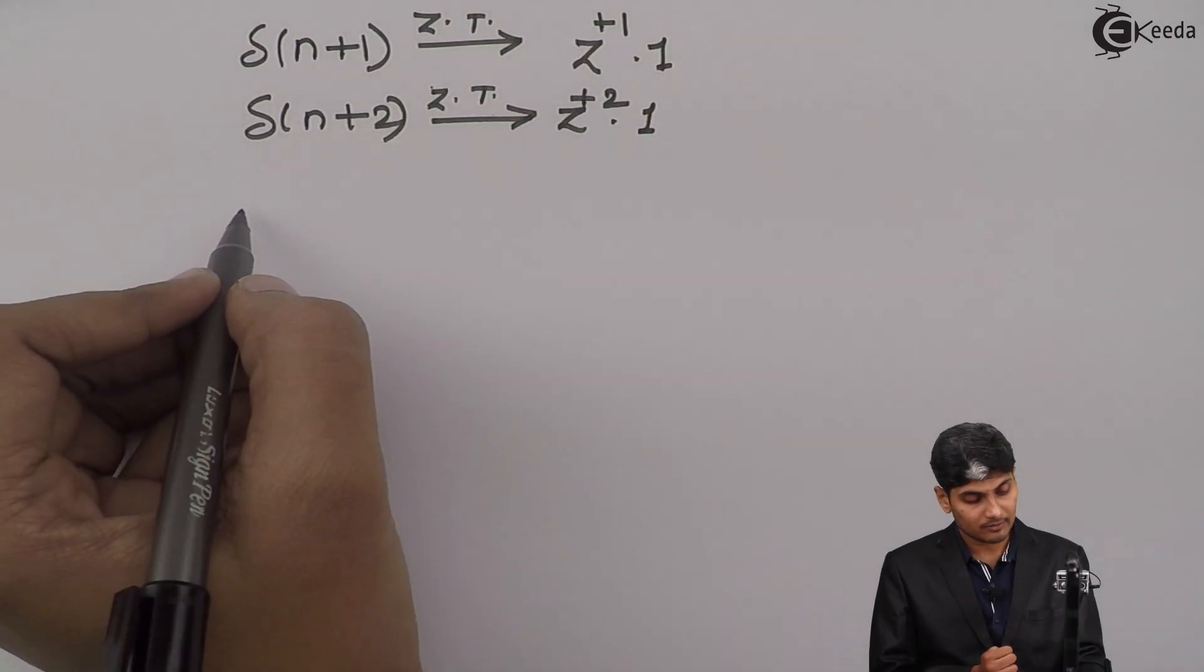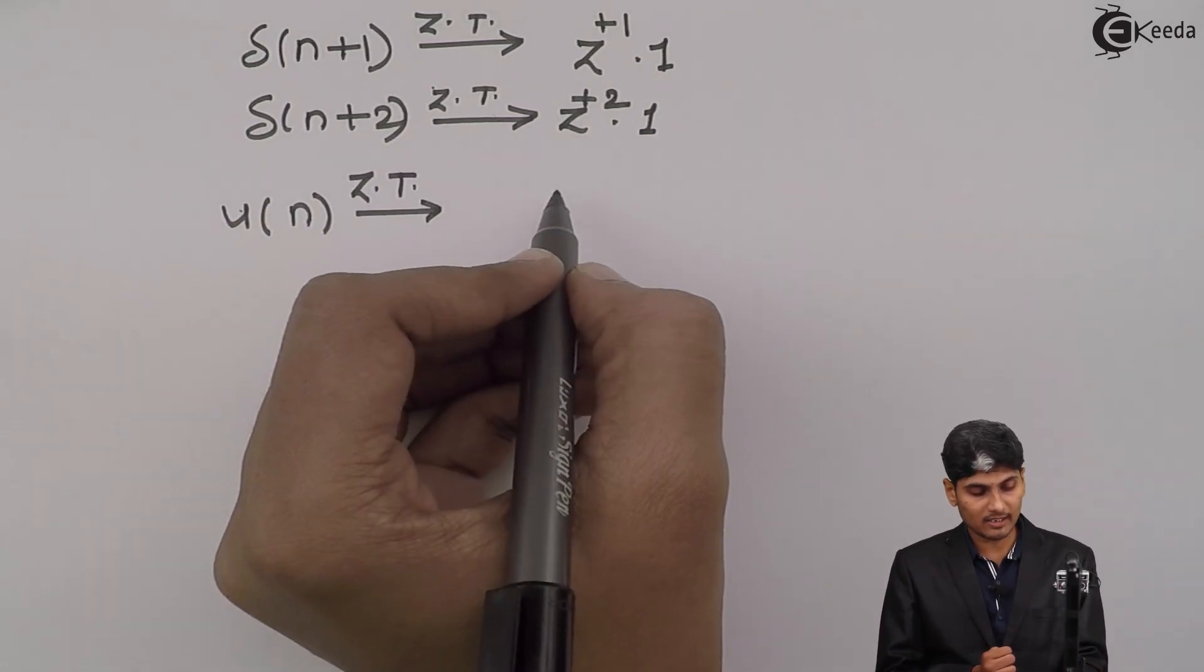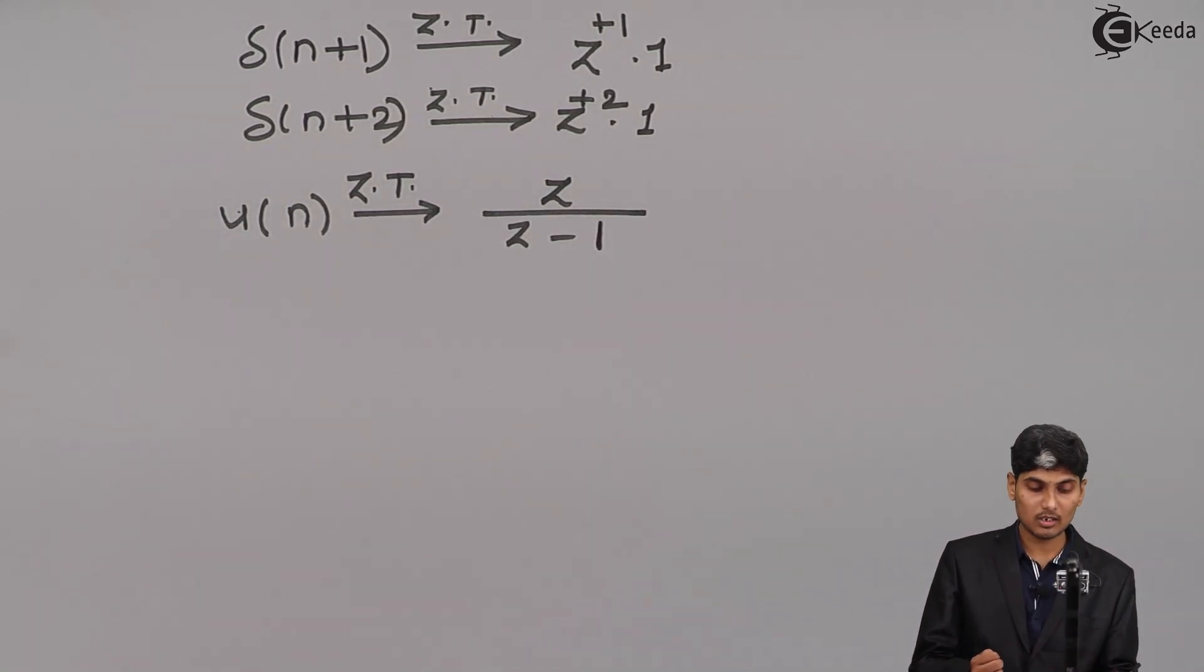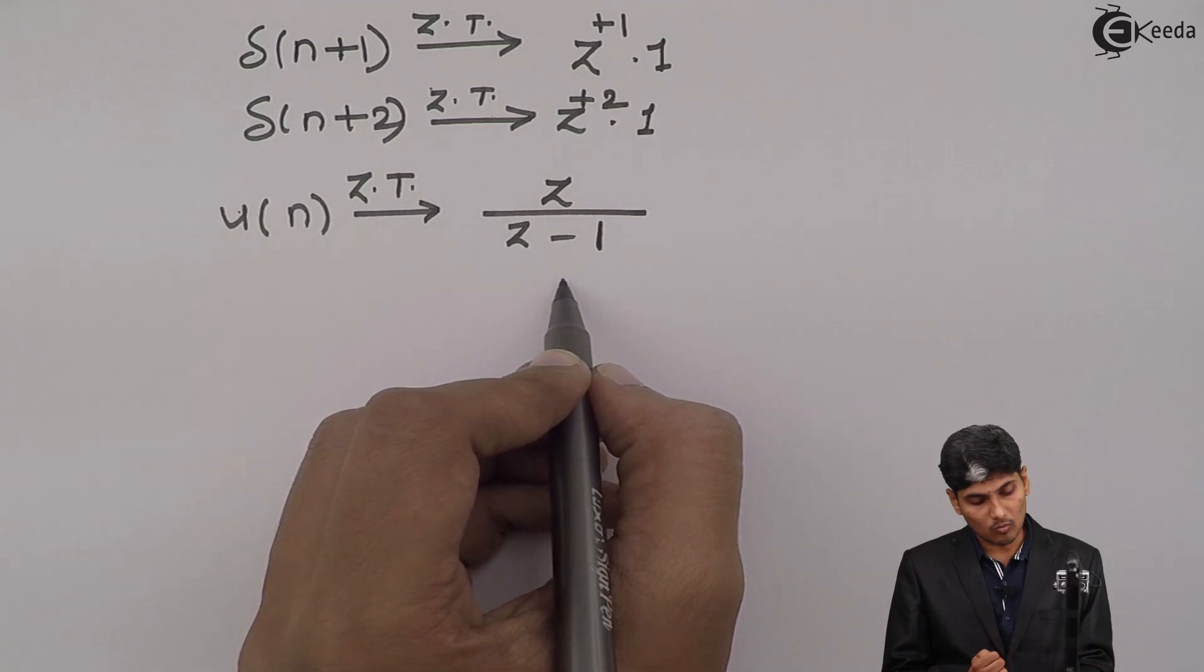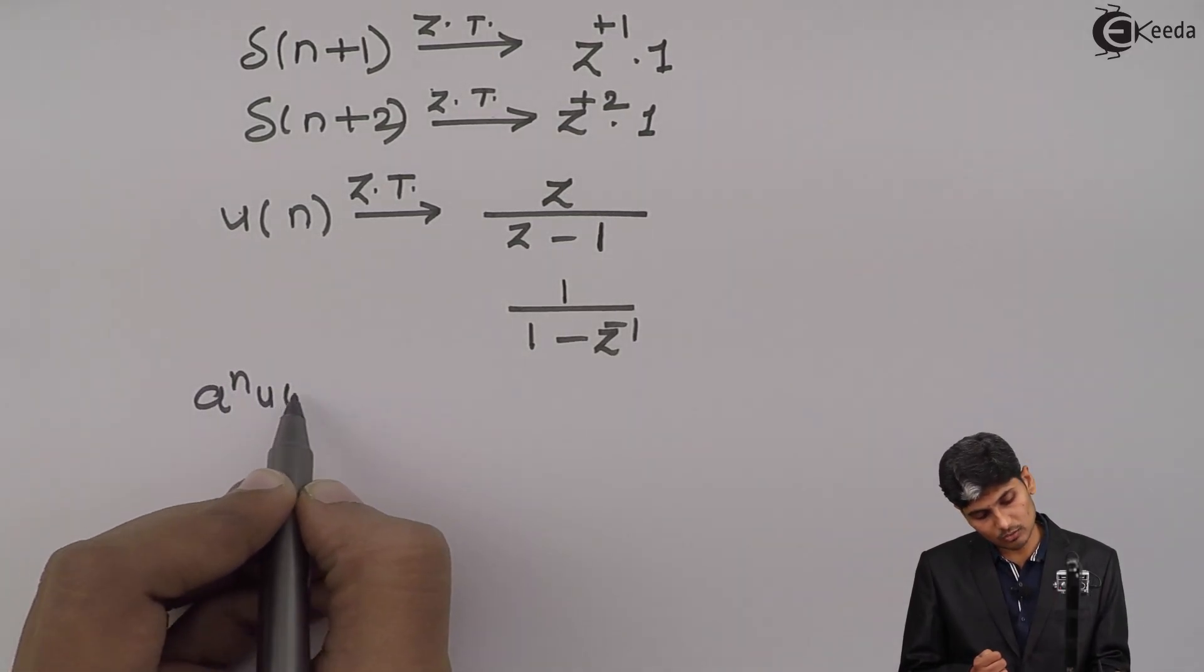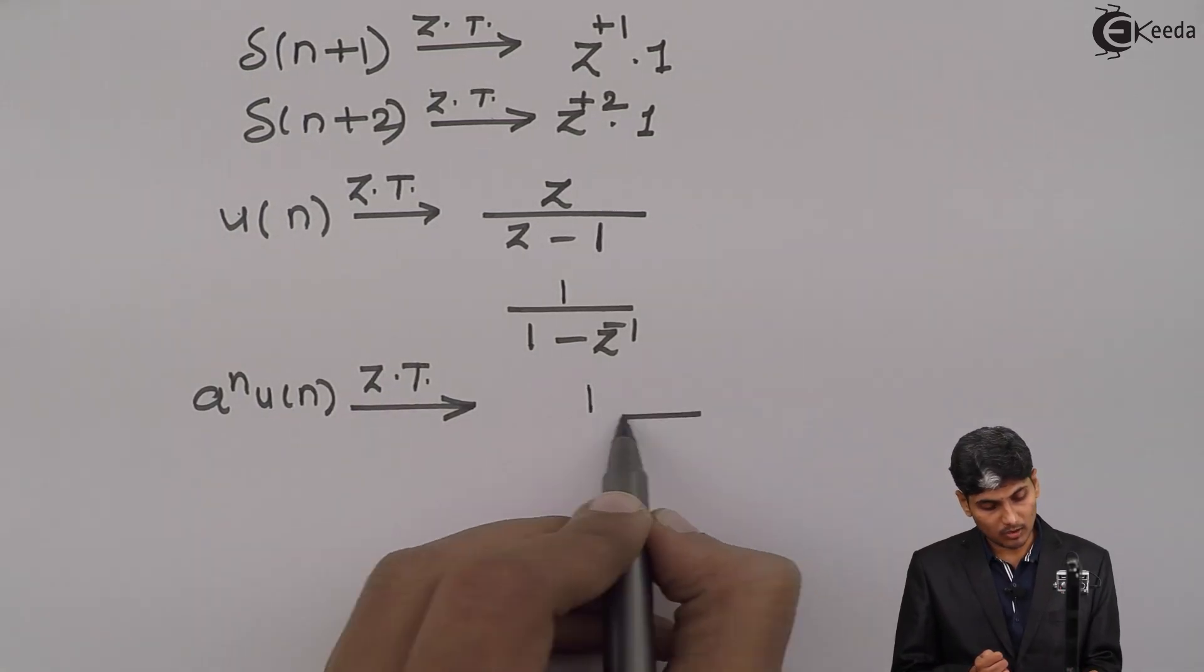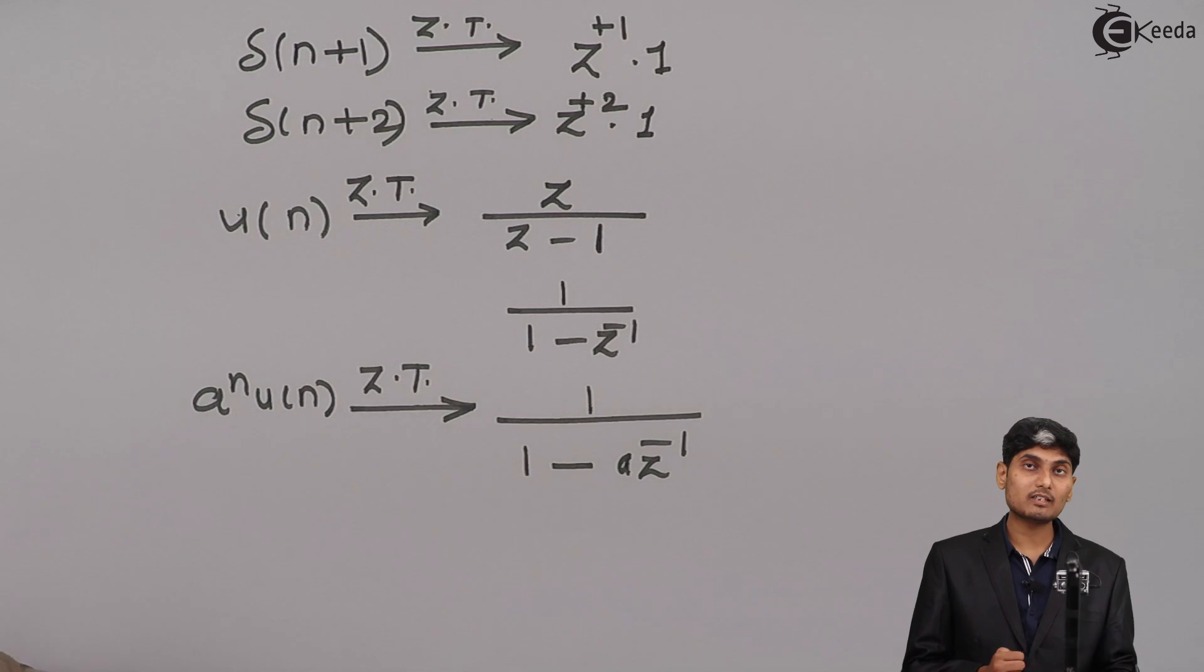Now let us take another signal which is the step signal U(n). U(n) Z transform is z/(z-1). Some books write it as 1/(1-z^(-1)), which is the same. Let's say I have A^n U(n). Its Z transform is 1/(1-Az^(-1)). There is a big chart of Z transforms, but we will be using only some.